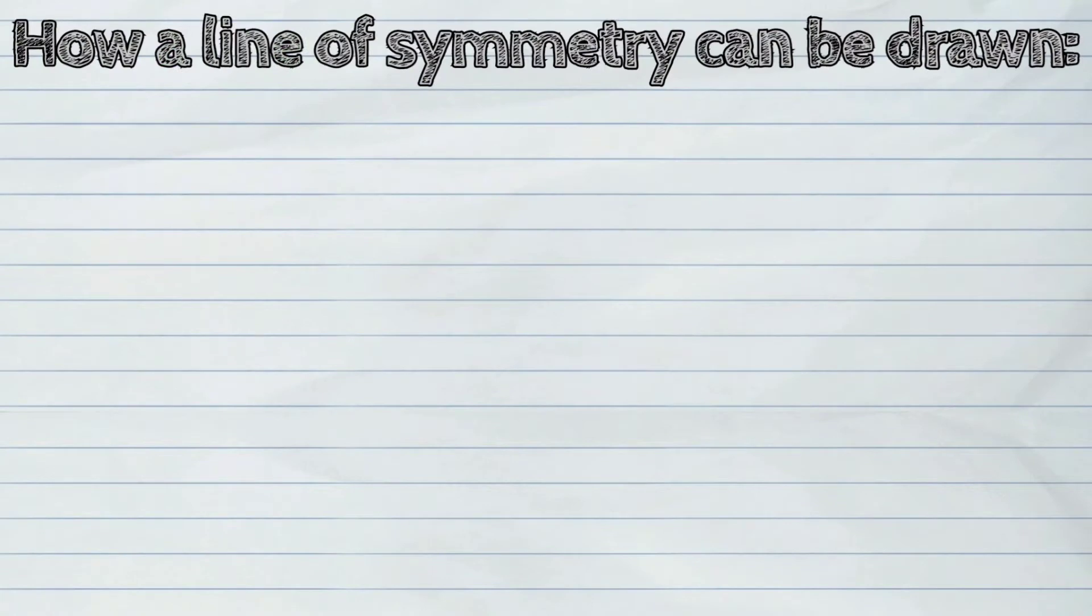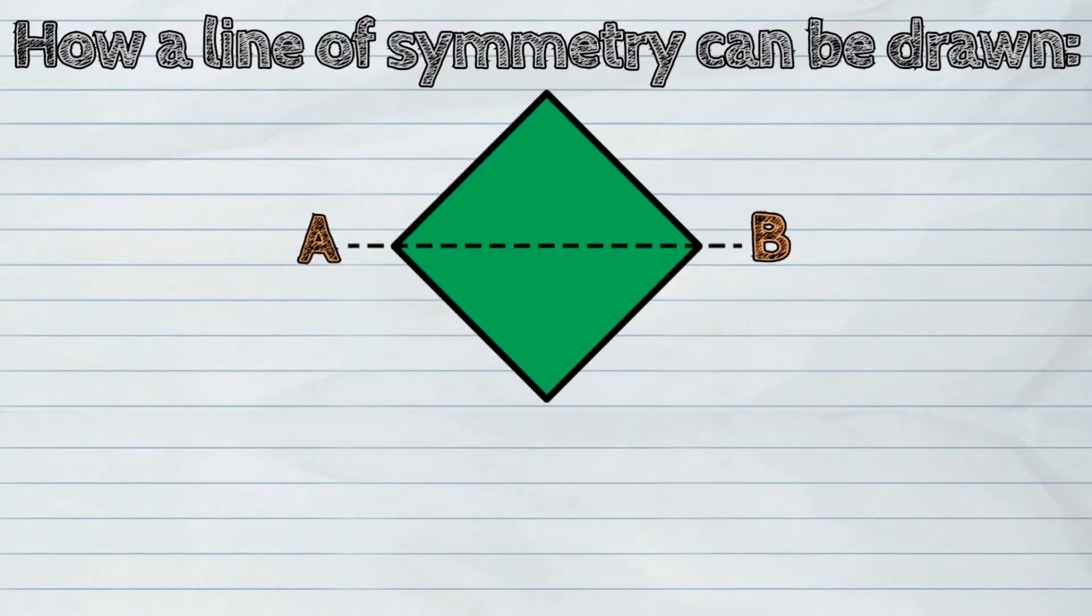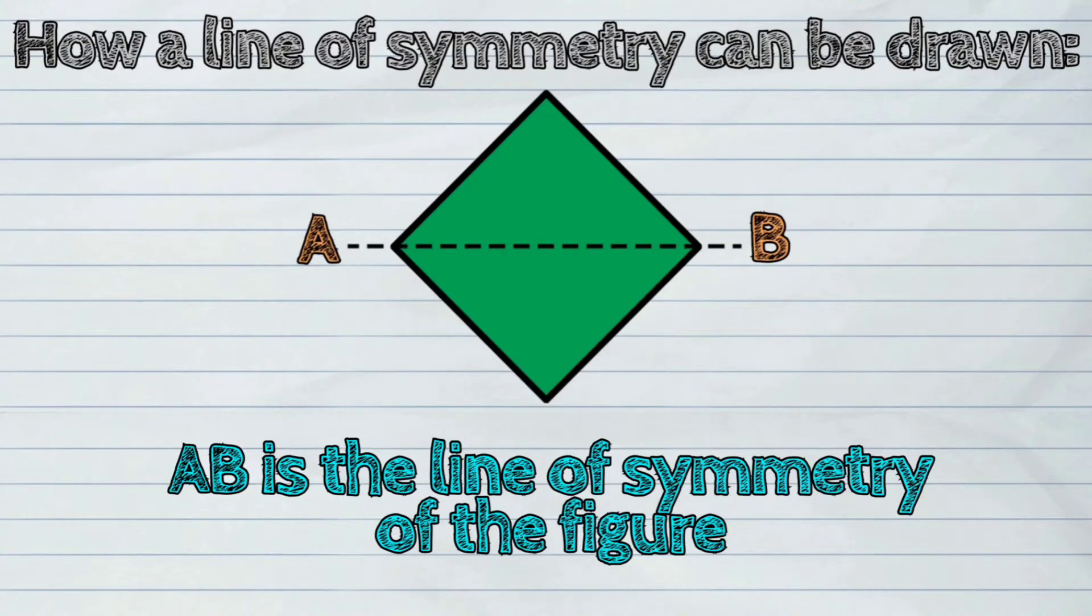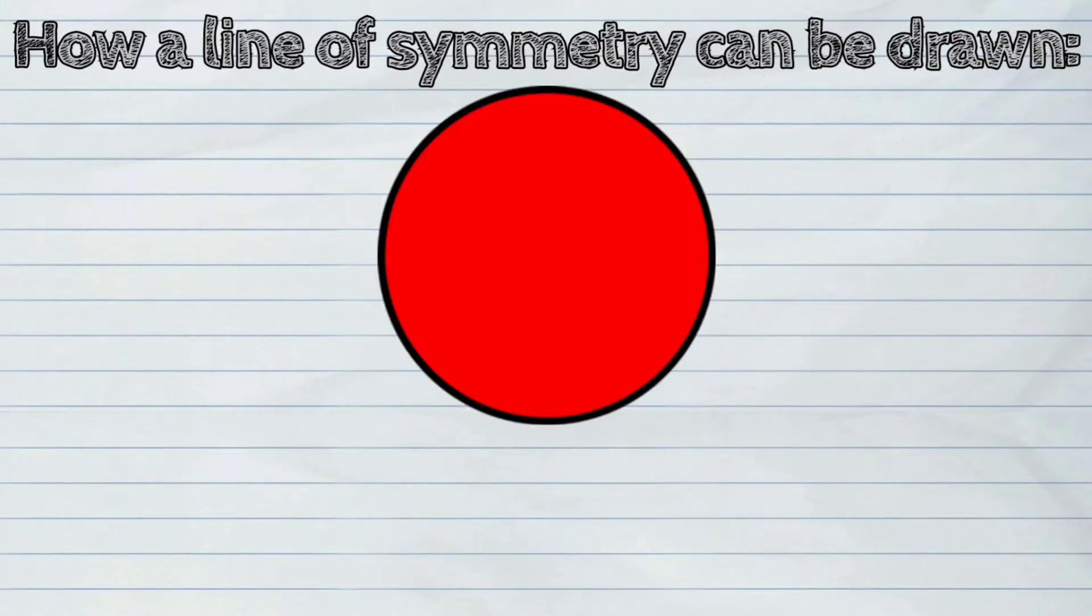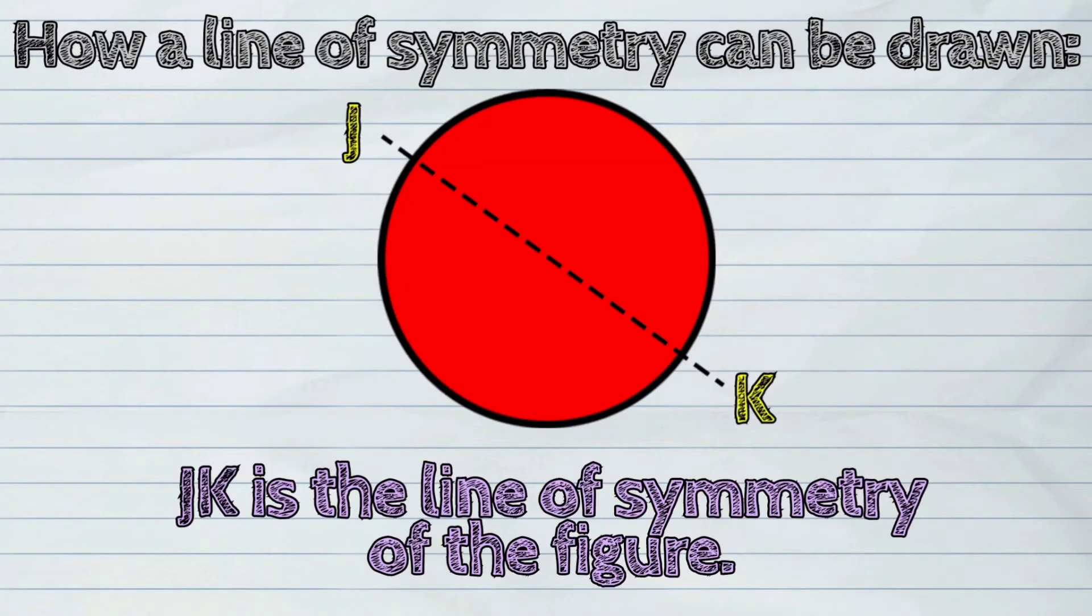Let us also look at some examples of how a line of symmetry can be drawn. First example, AB is the line of symmetry of the figure. Second example, JK is the line of symmetry of the figure.